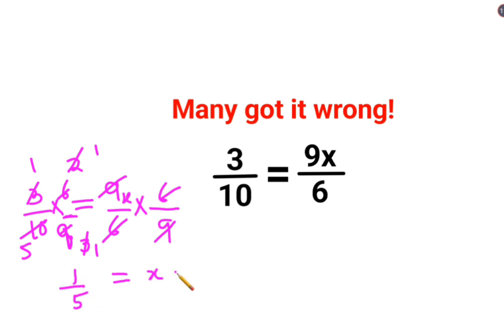Let's verify by putting it back in the question. We have 9 multiplied by 1/5, over 6. Please understand, whenever there is a fraction in the numerator, the denominator shifts to multiply the denominator.